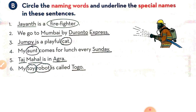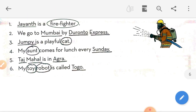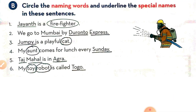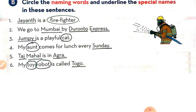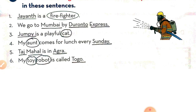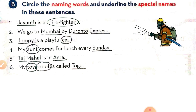Third sentence: 'Jumpy is a playful cat.' Jumpy is the name of a cat — it's a special name. Cat is a common noun, meaning a naming word. Fourth sentence: 'My aunt comes for lunch every Sunday.' Aunt is a naming word, and Sunday is a special name.